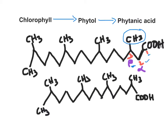Therefore, phytanic acid oxidation must occur in the peroxisomal matrix, carried out by the enzyme phytanic acid hydroxylase. This enzyme adds a hydroxyl group to the alpha carbon, which is then oxidized to a carboxyl group. The bond between the first and second carbons is broken, and the original carboxyl group is released as carbon dioxide.